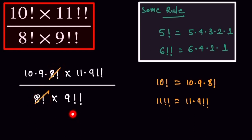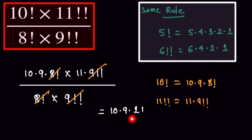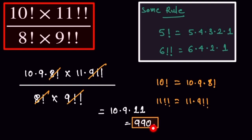And the 9 double factorial cancels out as well. So our remaining part is 10 into 9 into 11. When we multiply this, we get 990, and this is our final answer. Thank you so much for watching my video. If you like the video, then subscribe to our channel and share it with your friends.